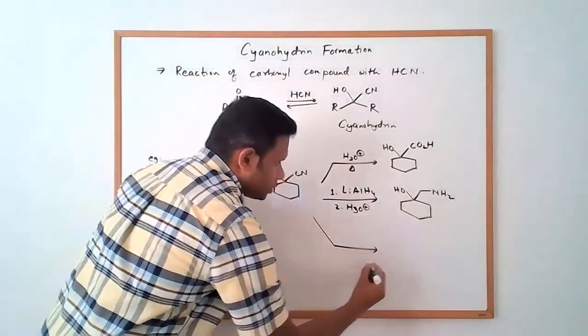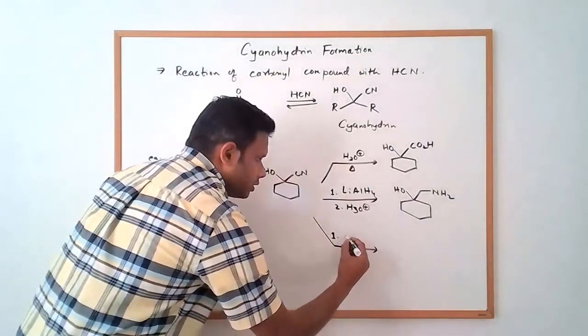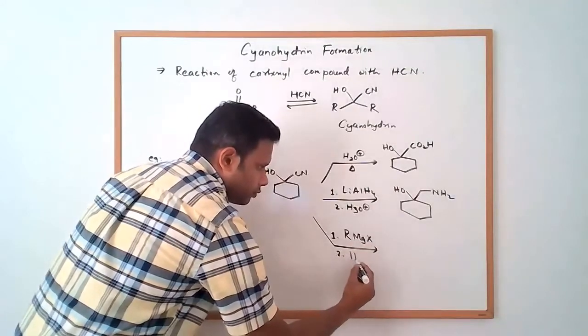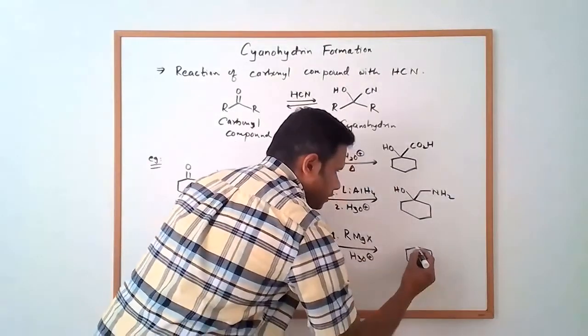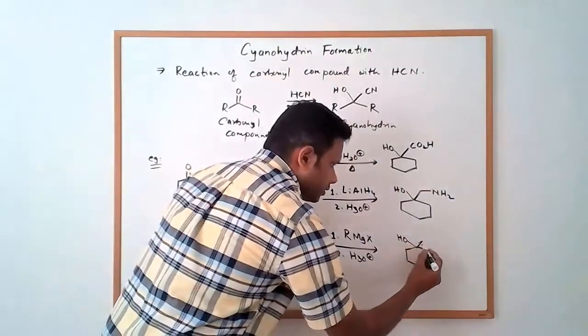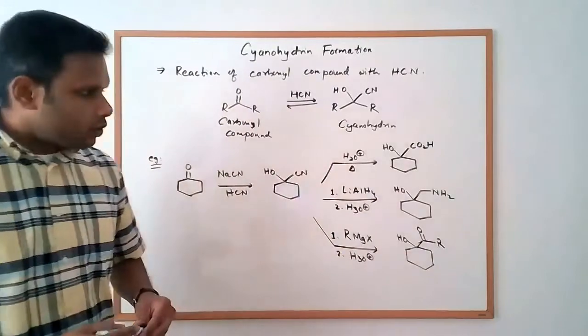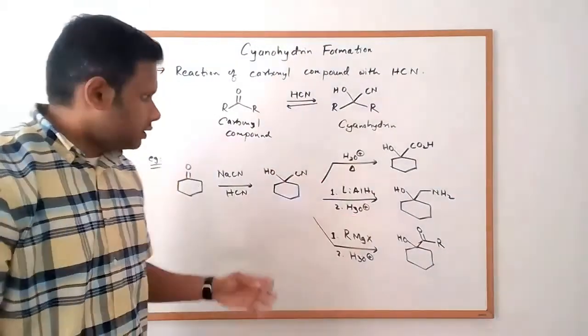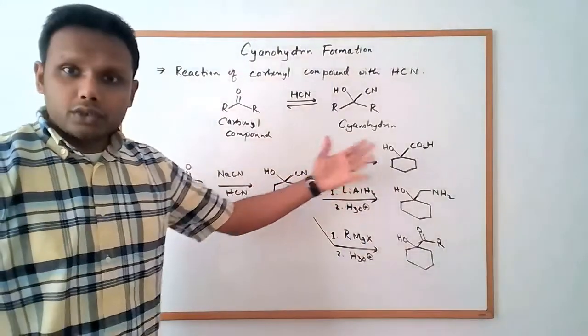Similarly, nitriles can be reacted with Grignard reagents. So if you react this with, say, RMGX, follow it up with a workup, that would give you a hydroxyl group there. And this nitrile group under these conditions would be converted into a ketone group. So you notice how you have a lot more leverage here in terms of the reactions that can be done. Once you have the cyanohydrin, you've got the hydroxyl group and you can convert the nitrile into other groups.